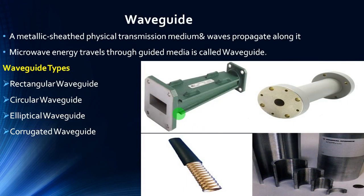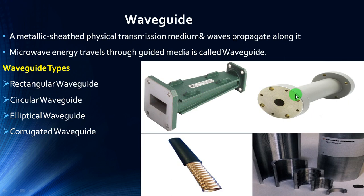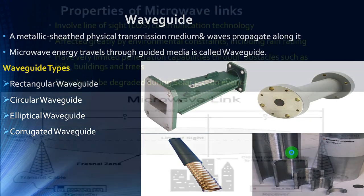A waveguide is a metallic physical transmission medium along which a wave propagates. Microwave energy that travels through this guided media is called a waveguide. We have 4 types of waveguides: rectangular waveguide, circular waveguide, elliptical waveguide, and corrugated waveguide. This is the rectangular waveguide, this one the circular waveguide, this one the elliptical waveguide, and this one the corrugated waveguide.